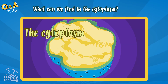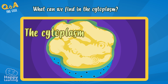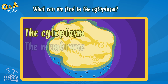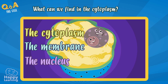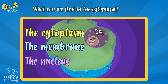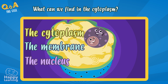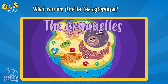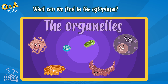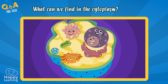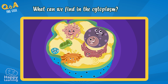The cytoplasm — what a weird word — is a liquid substance which is found between the membrane and the nucleus. And here, in the cytoplasm, we can find the organelle. The organelle are different between themselves, and each one has a distinct function. Some, for example, are in charge of digesting food, and others of eliminating waste.